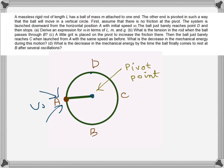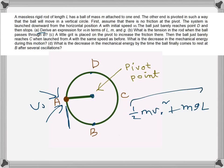First, we need to derive an expression for v_naught in terms of l, m, and g. At position A, the mechanical energy consists of kinetic energy — half m v_naught squared — plus potential energy mgl, where l is the height from the lowest position B up to A.